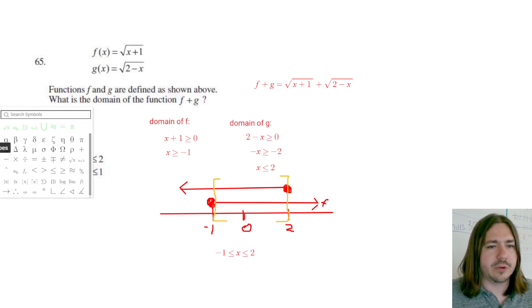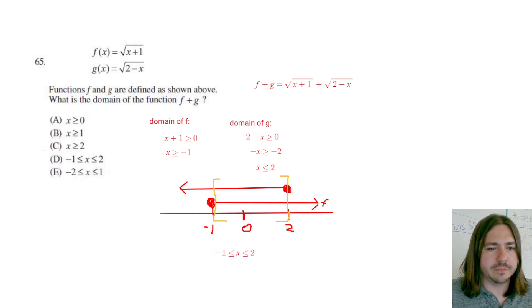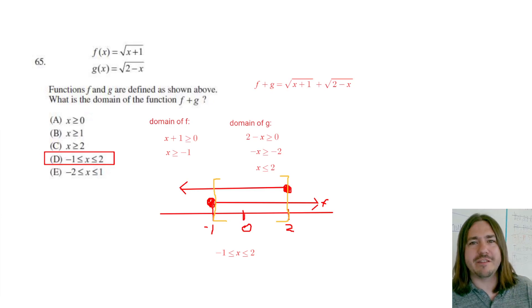So that's going to be our domain for the combined function. So our answer here is D. And that's it for number 65. Thanks for watching, and y'all have a great day.